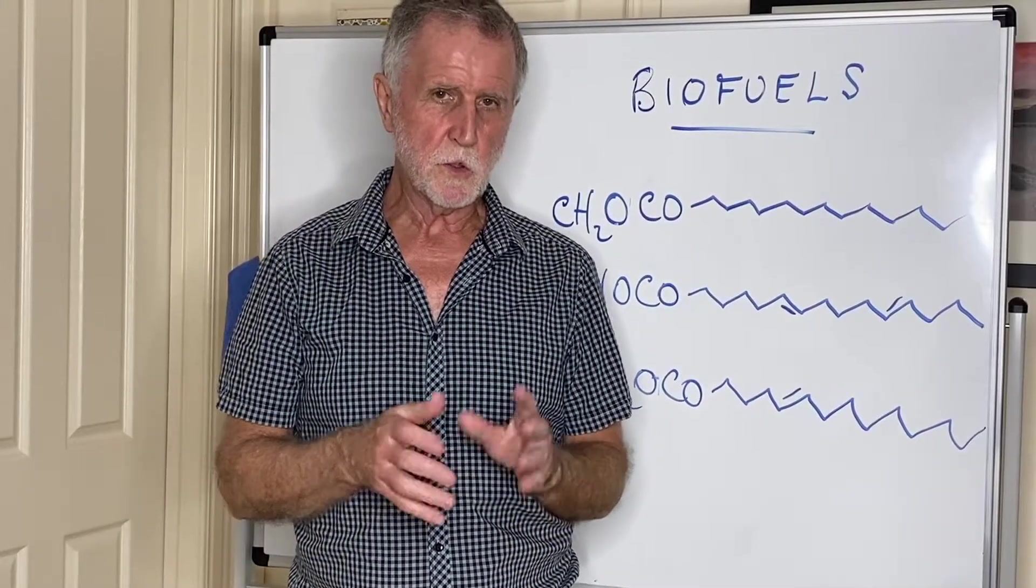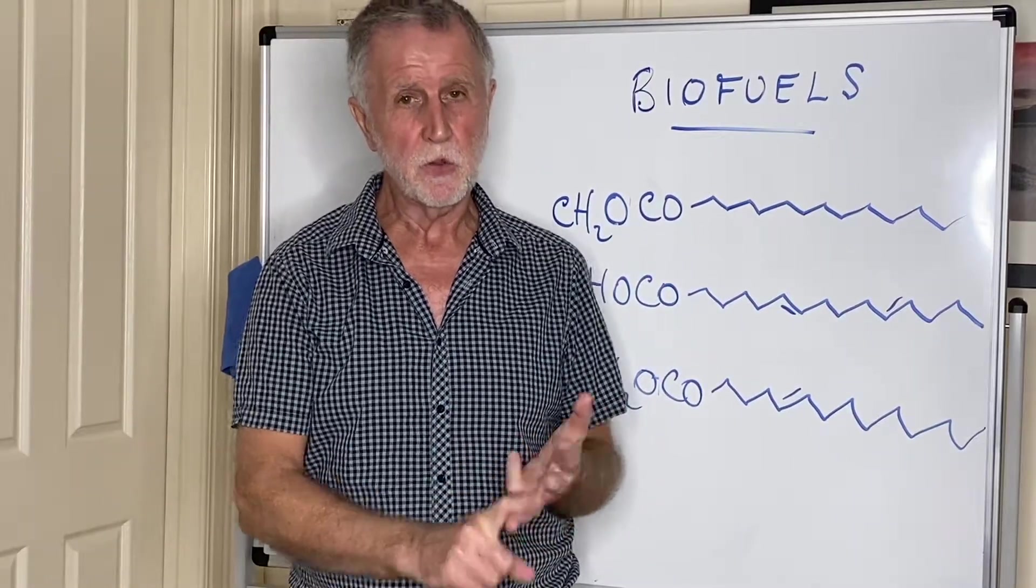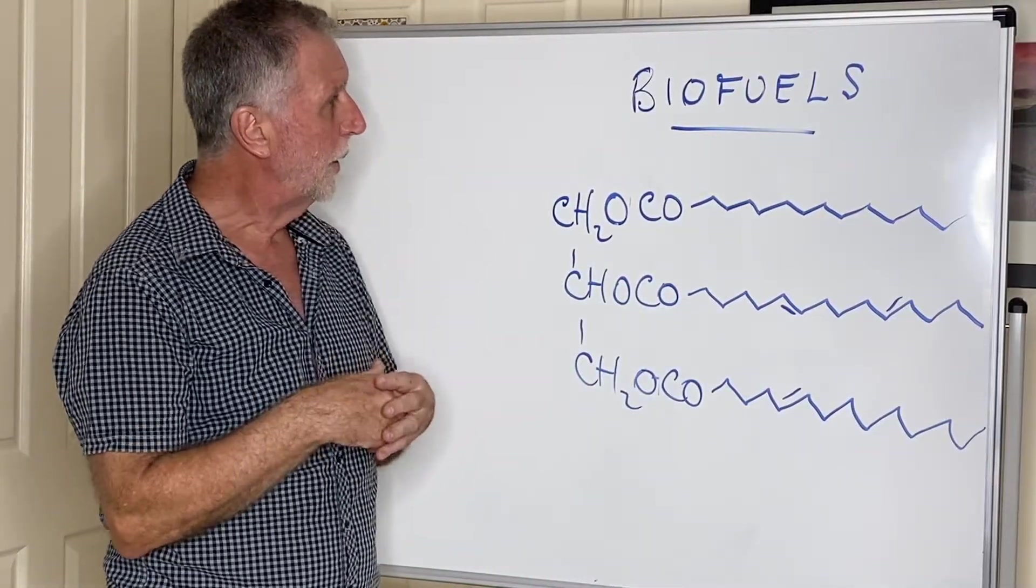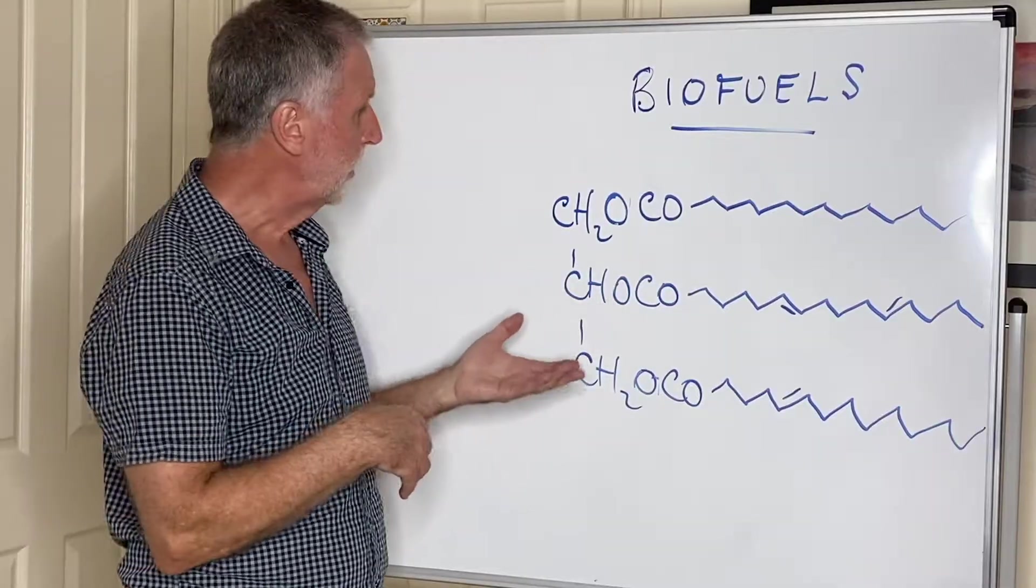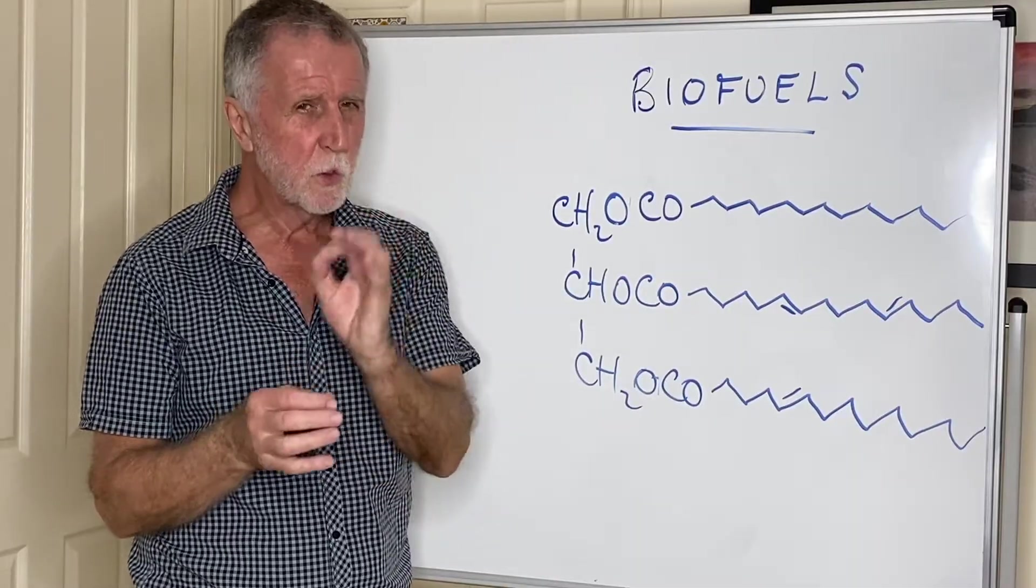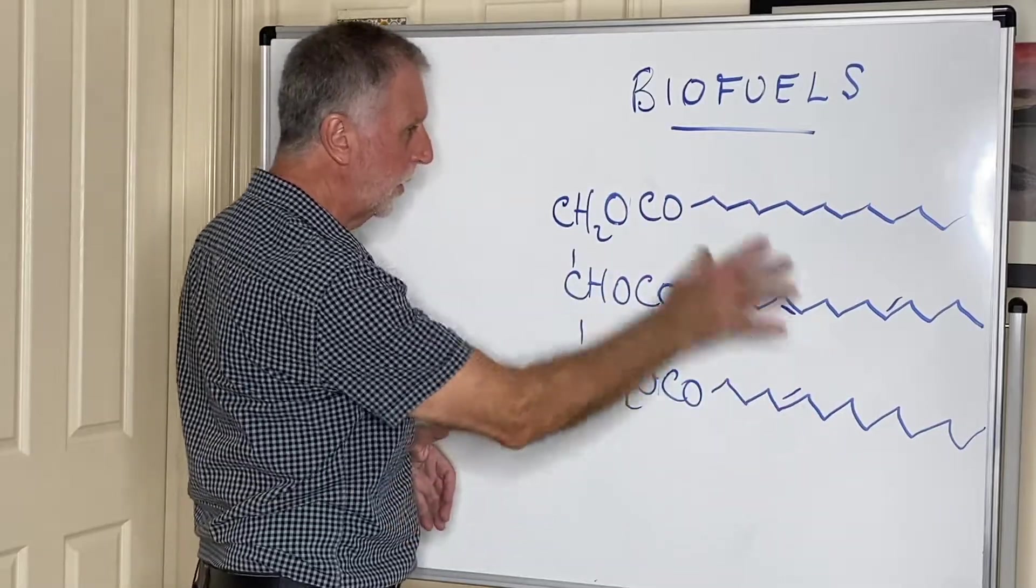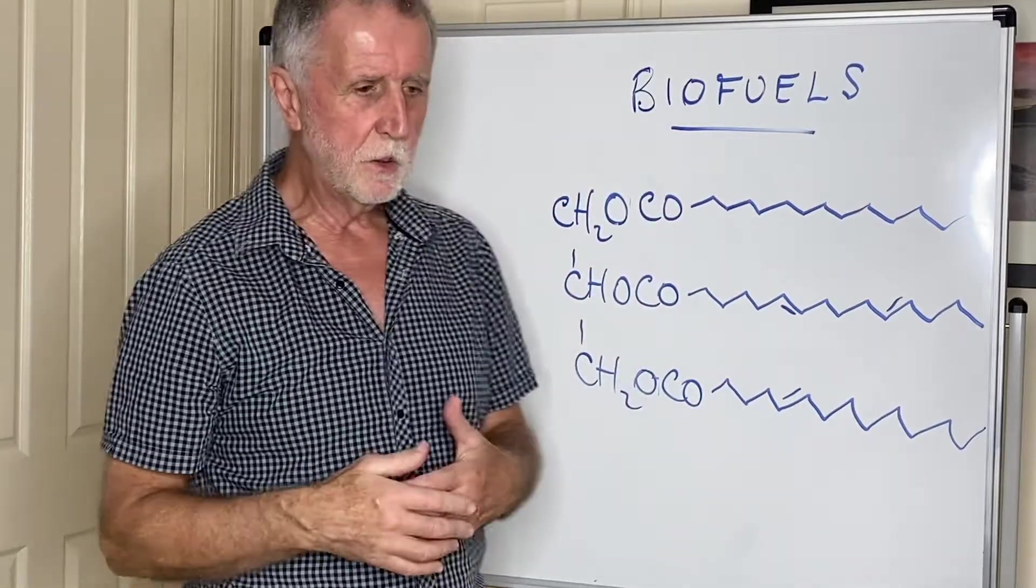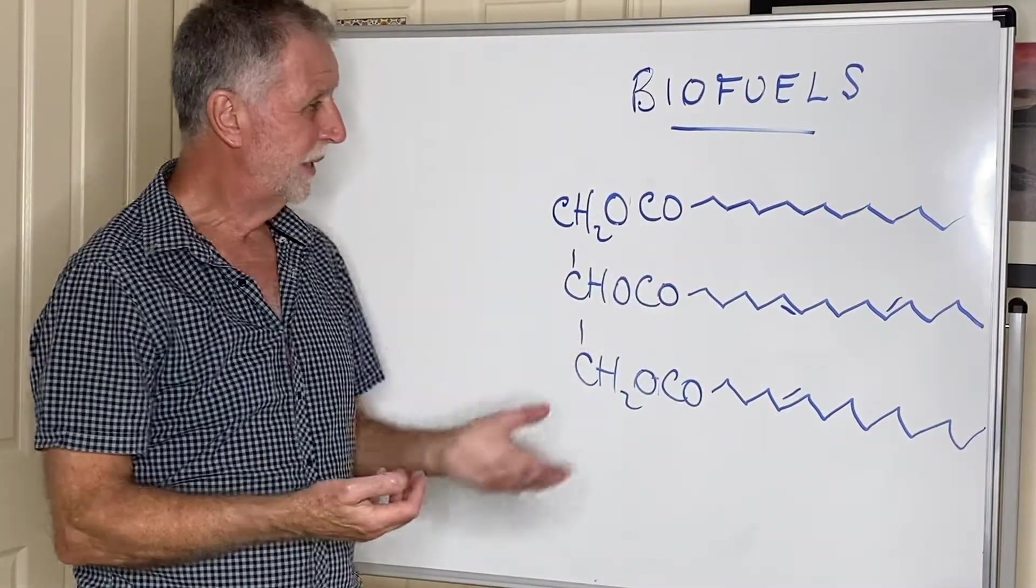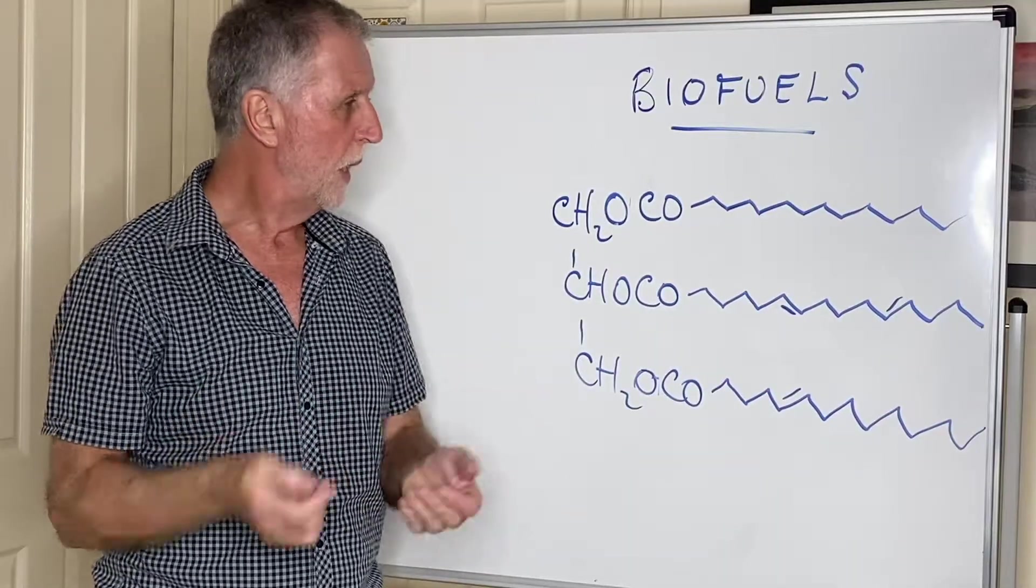There are two biofuels that the syllabus requires you to know about. One is biodiesel and the other one is ethanol. Biodiesel is very similar to how soap was made in an earlier video; biodiesel is made in a very similar way, there's just one or two slight differences. If this is your vegetable oil or fat, then before biodiesel came along, this would have just been disposed of, and it's very wasteful if there's any way you could possibly use it again.